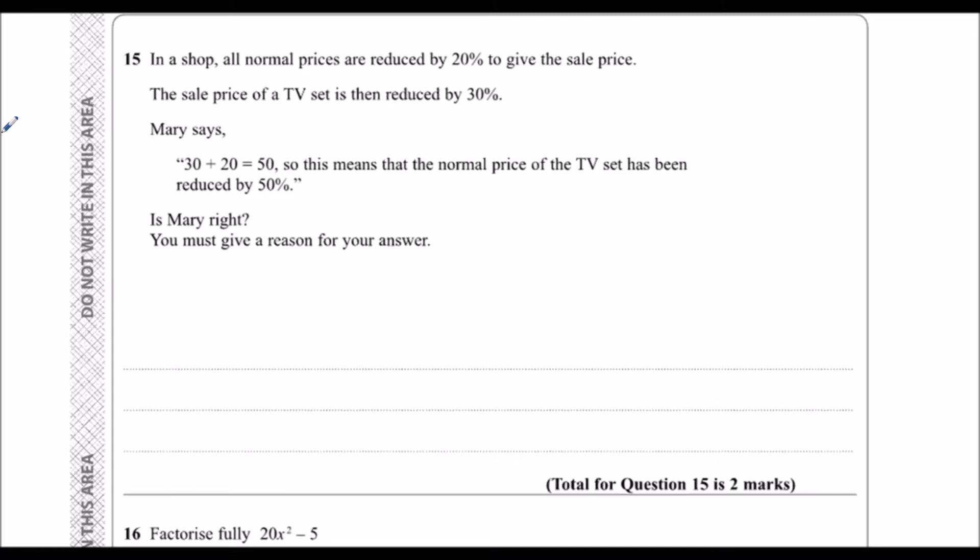The price is then reduced again by 30%. Mary says 30 plus 20 is 50, so the normal price has been reduced by 50%. Is she right? Well, no, she isn't.